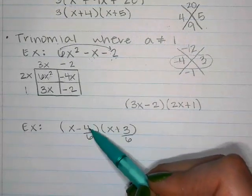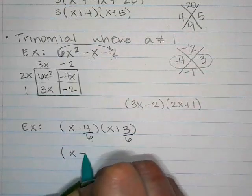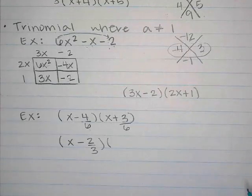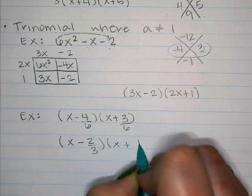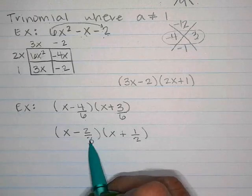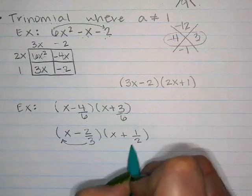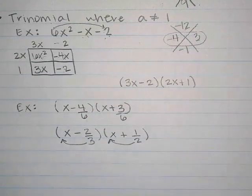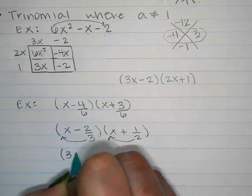The fractions need to be reduced. 4 over 6 reduces to 2 over 3, giving us x minus 2/3. And 3 over 6 reduces to 1/2, giving us x plus 1/2. The last step is called 'bottoms up' — move the denominator of each fraction to the front. So 2/3 becomes 3 in front: (3x minus 2)(2x plus 1). Same answer as the box method.